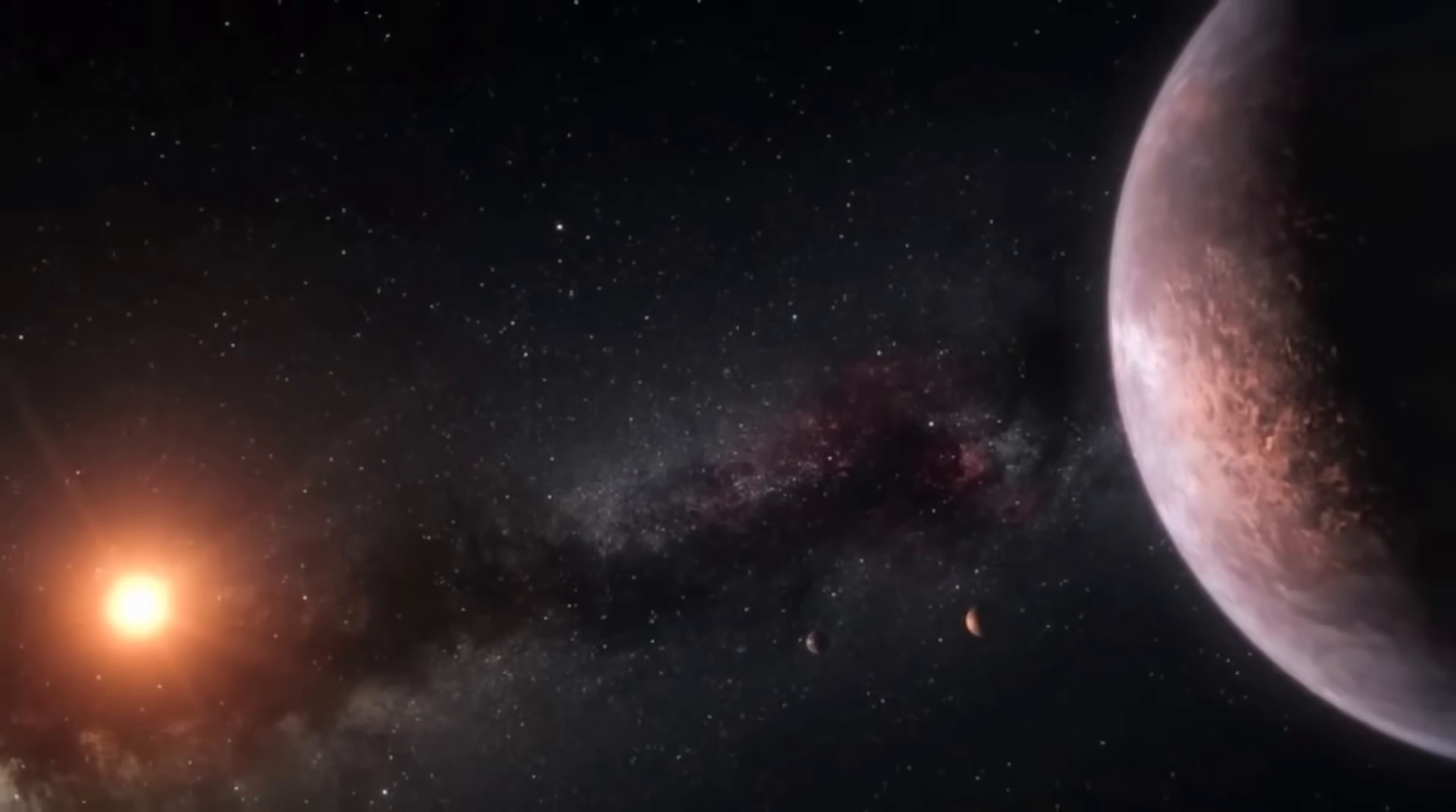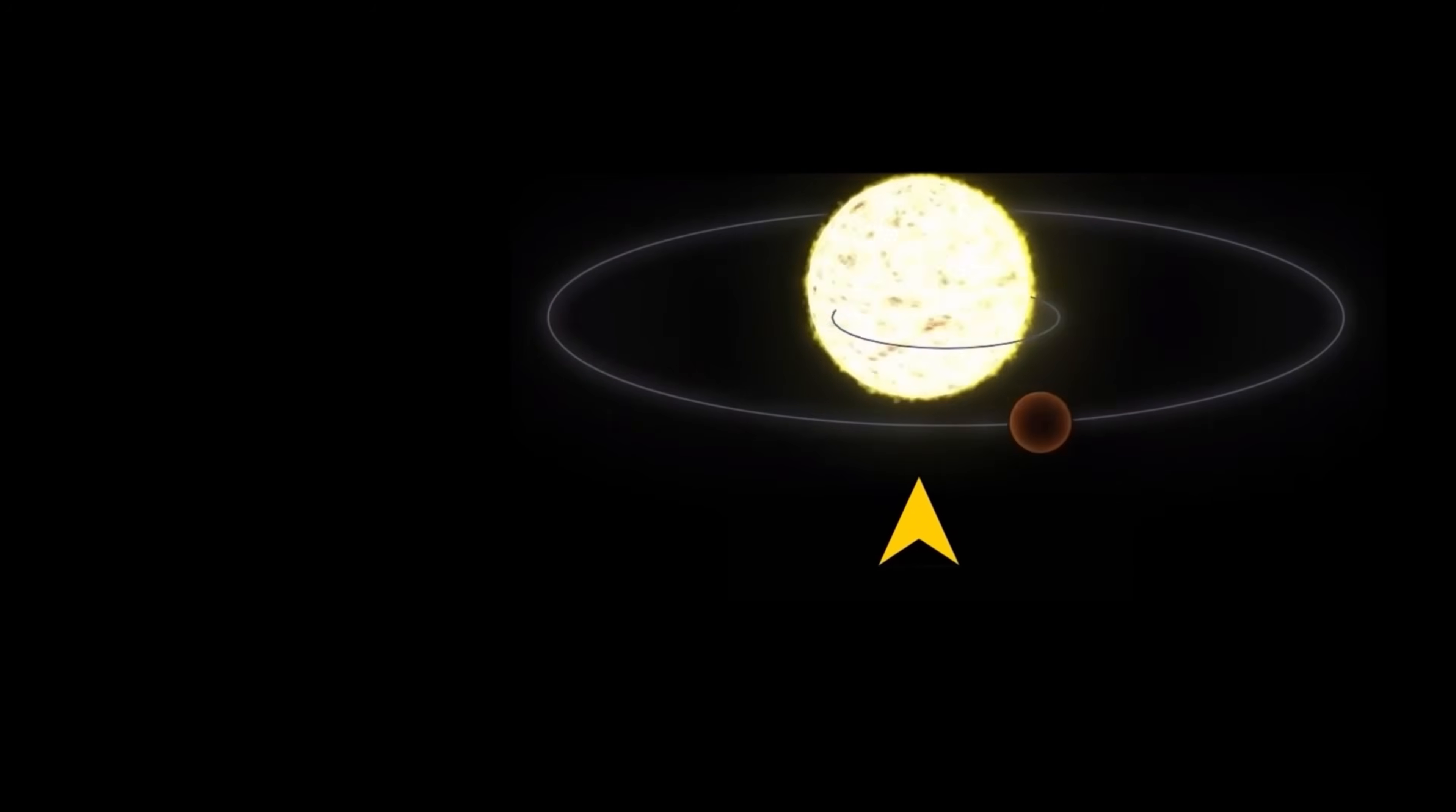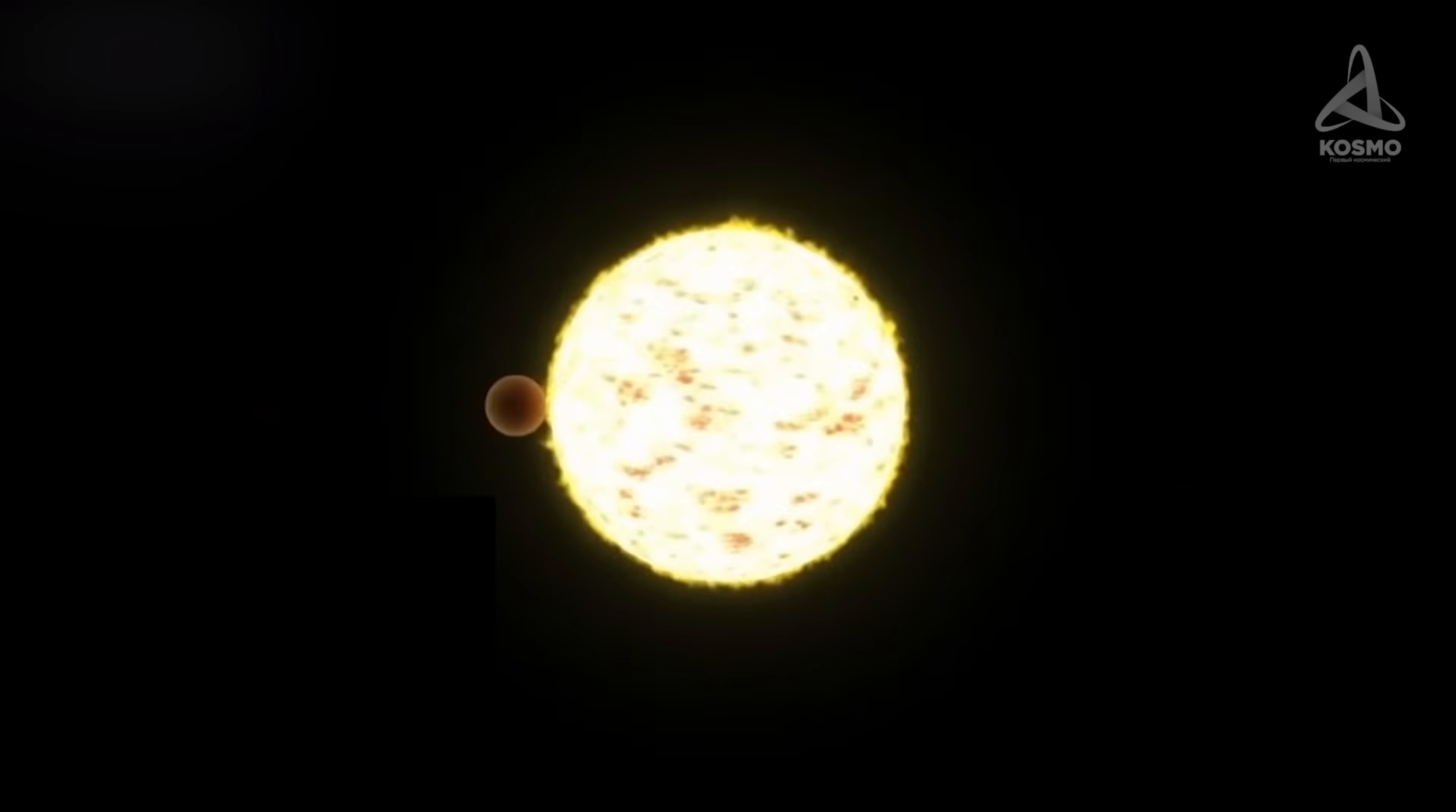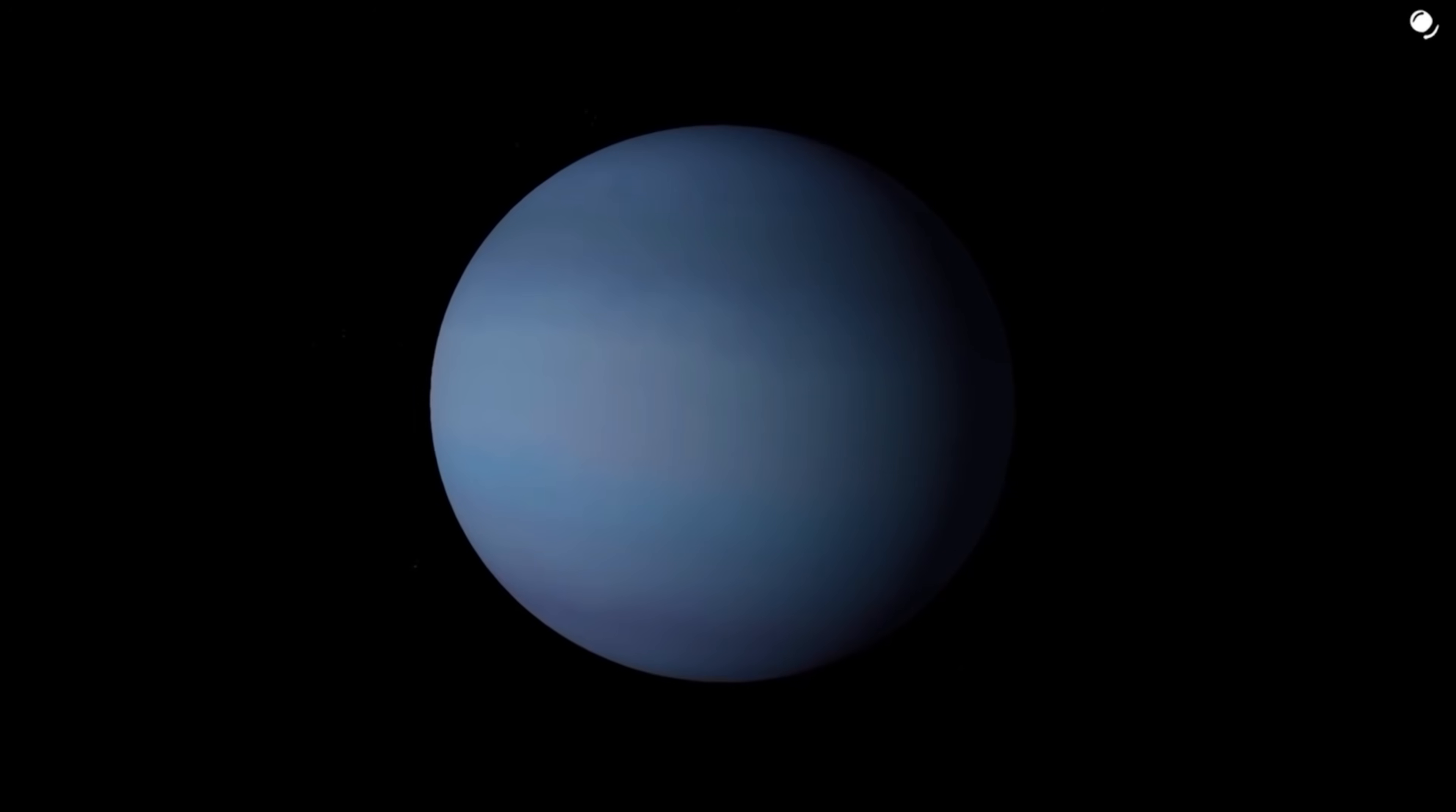To deal with the problem of excessive brightness of stars in comparison with planets, scientists resort to several methods at once. The easiest for us to understand is the method of eclipses. When a planet passes through the parent star, it can be seen as a black dot when viewed from afar. And if it's orbiting, voila, you've found an exoplanet. There are other, more complex ways. Along with them, methods of analyzing exoplanets are also evolving.